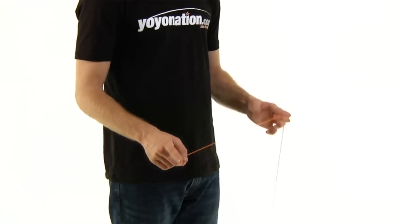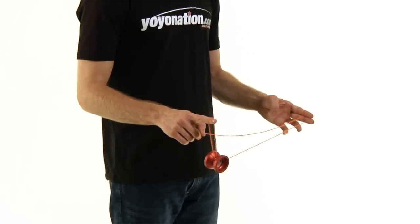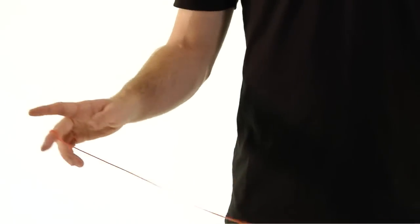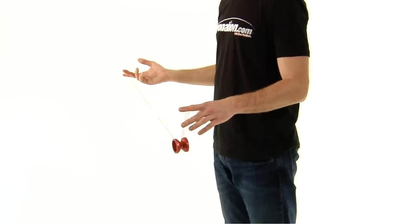The yoyo will wrap around your finger and land on the string, exactly as in trapeze, but on the other side. Make sure you intercept close to the yoyo and keep all movement straight and parallel to your body.